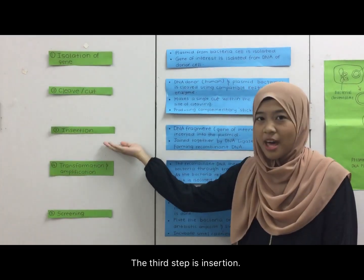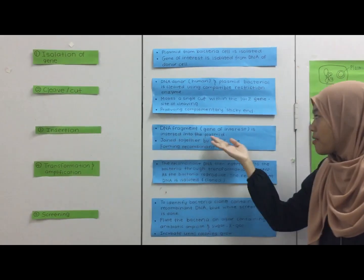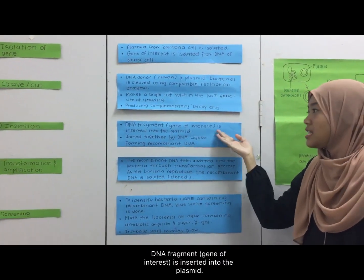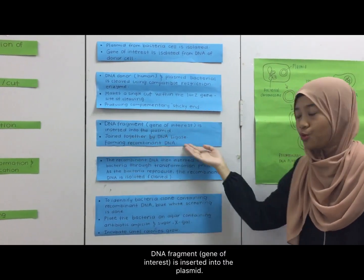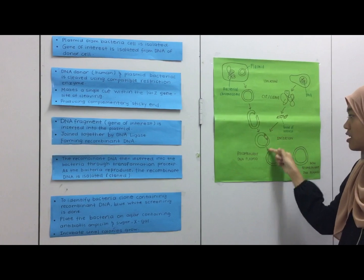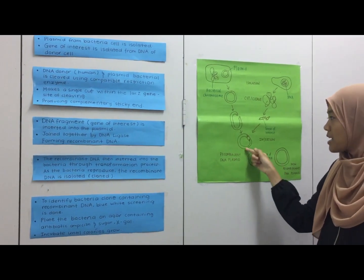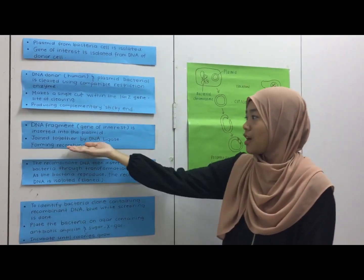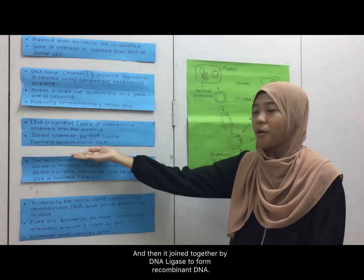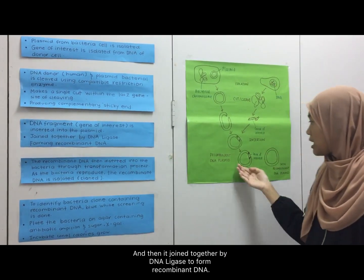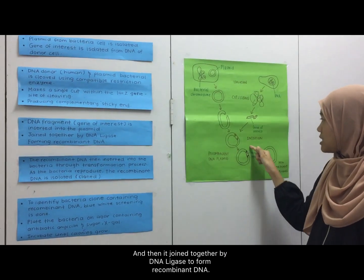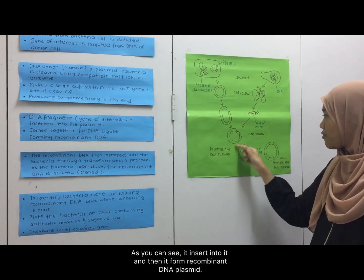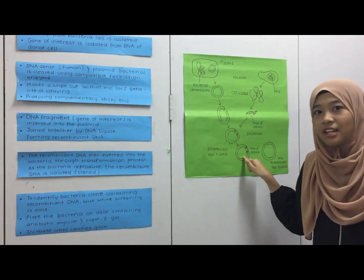For the third step, insertion: the DNA fragment which is the gene of interest is inserted into the plasmid. It is inserted into the plasmid and then joined together by DNA ligase to form recombinant DNA. As you can see, it is inserted into it and then it forms a recombinant DNA plasmid.